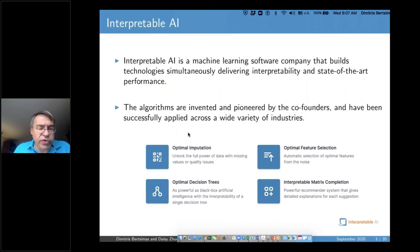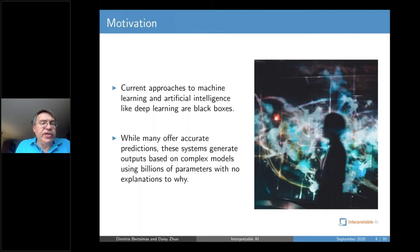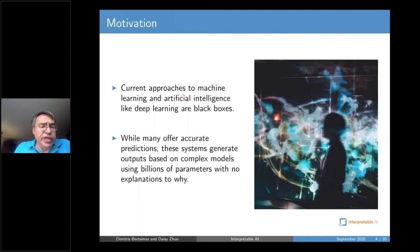We are both trying to be current and innovative. The key motivation of the company is the fact that machine learning and artificial intelligence methods that have really affected society — deep learning is a good example — are by and large black box methods. Namely, you don't really know what is happening underneath.